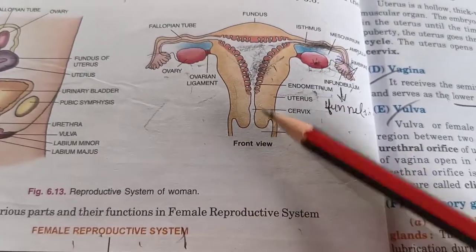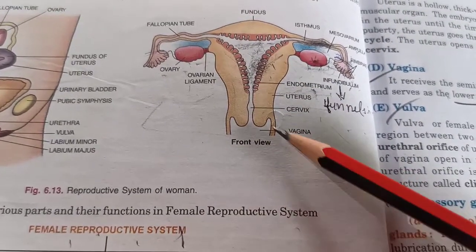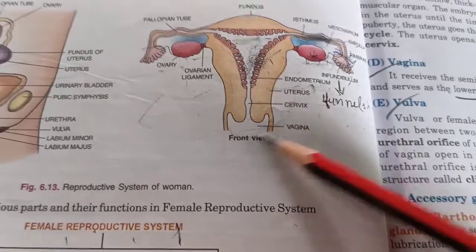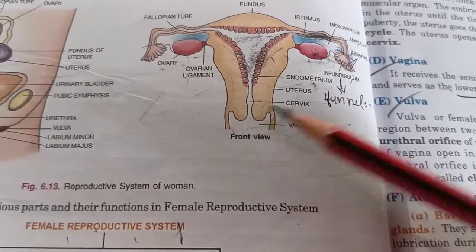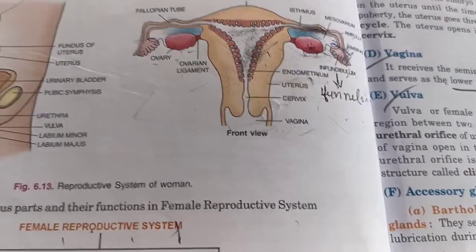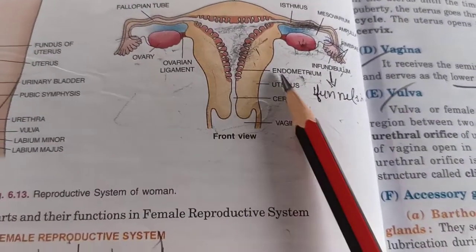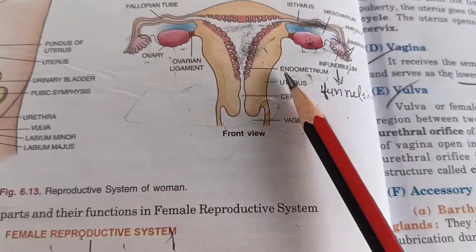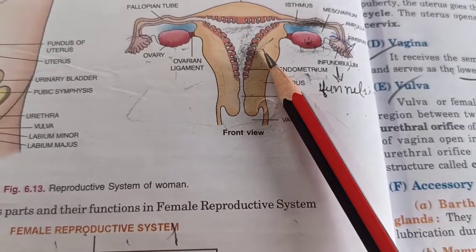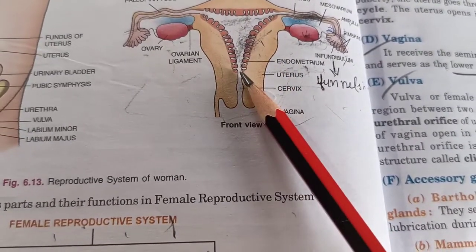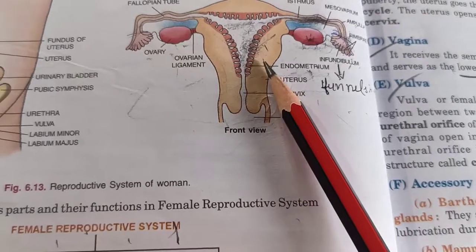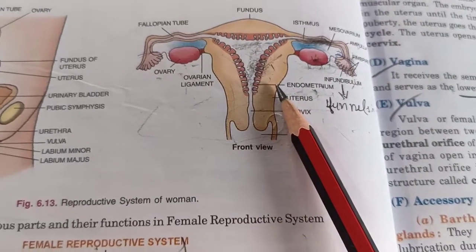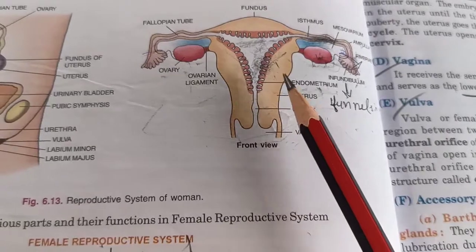Below the uterus are the cervix and vagina, which are external portions that help in sexual activity and physical intercourse. The endometrium layer visible inside the uterus participates in the menstrual cycle as well. I will explain the function of endometrium when I teach the menstrual cycle topic.